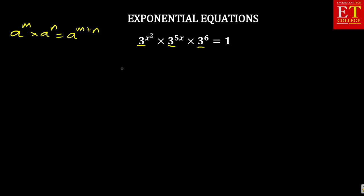So, on the left hand side, you can have your 3 as the base, in which you are adding x squared plus 5x plus 6. Remember, the exponent is equal to 1. Now, what are we noting with 1 again? If you still remember, we said any number to the power of 0 is 1.